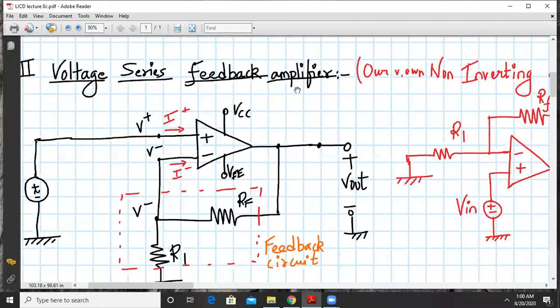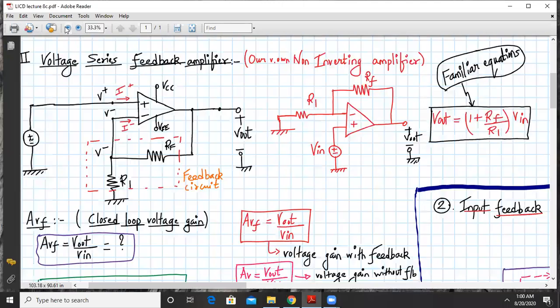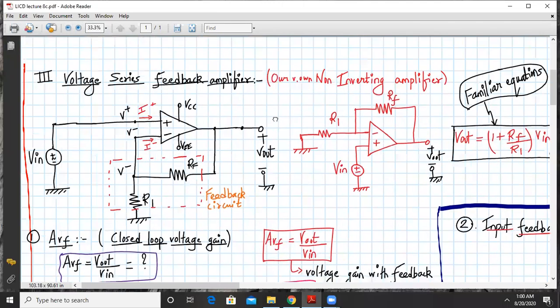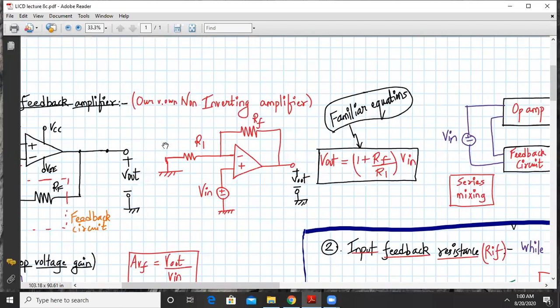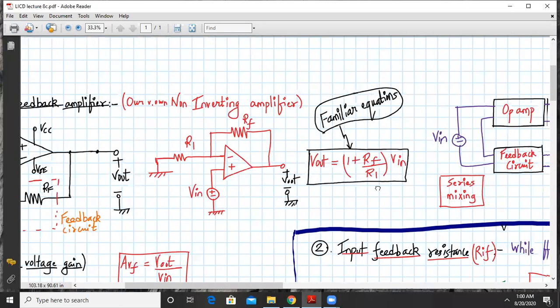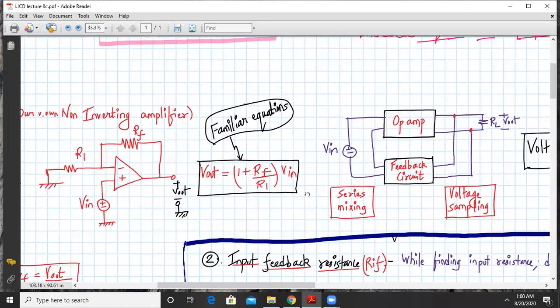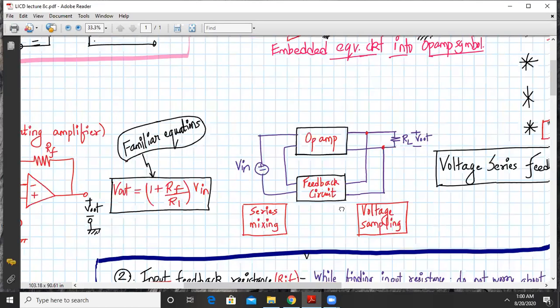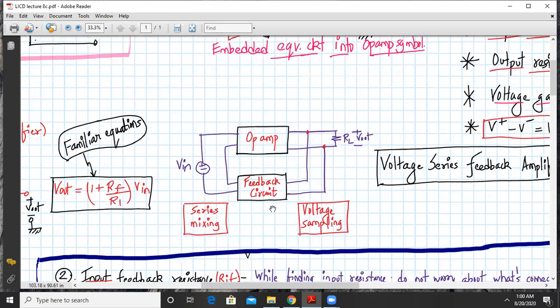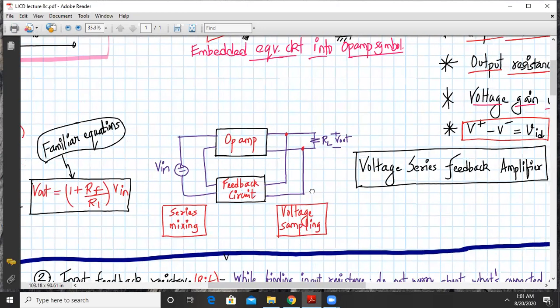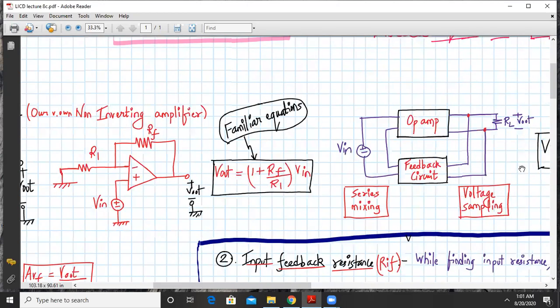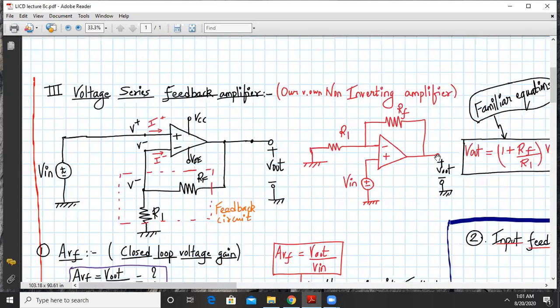This is our voltage series feedback amplifier. This is a non-inverting amplifier which we have already seen, and its output expression is already derived: Vout equals 1 plus Rf upon R1 times Vin. This is the block where at the input side the voltages are getting added in series mixing, and at the output side you have voltage sampling. This is the voltage series feedback amplifier.